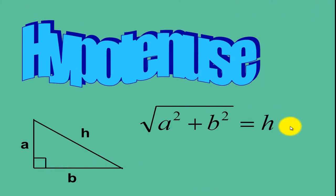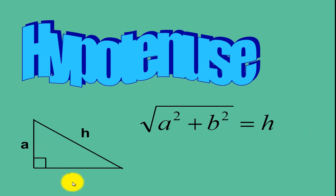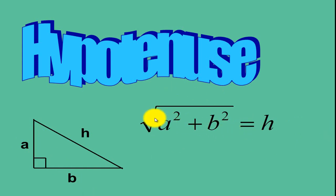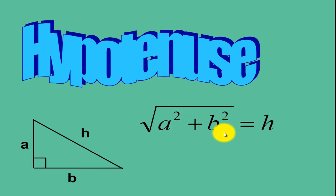So if we don't know the value of our hypotenuse and we have the value of our legs, we can use this formula. Just take the square root of the sum of the squares of your two legs and that will be your hypotenuse.